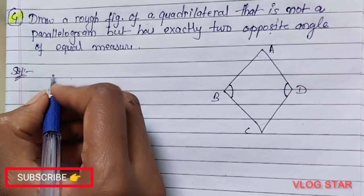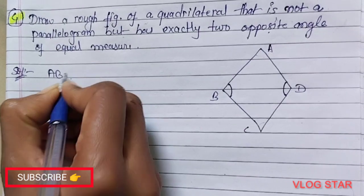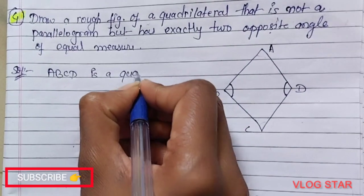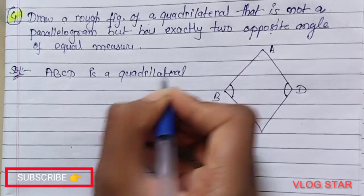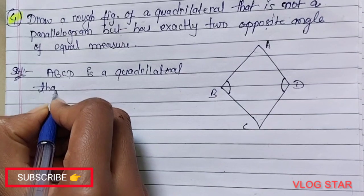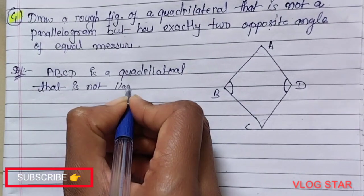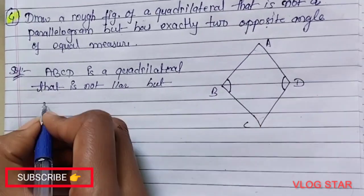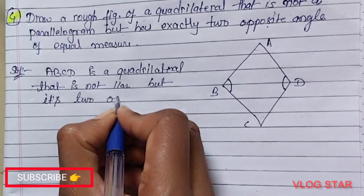You write here: ABCD is a quadrilateral that is not a parallelogram, but its two opposite angles are of equal measure.